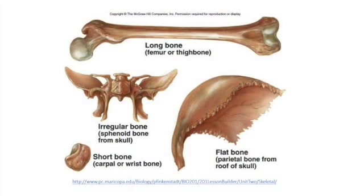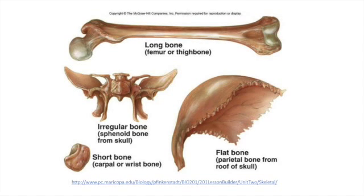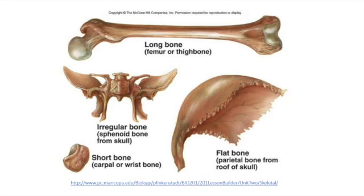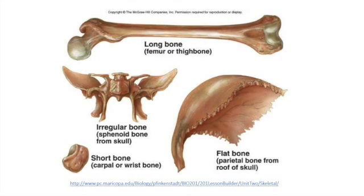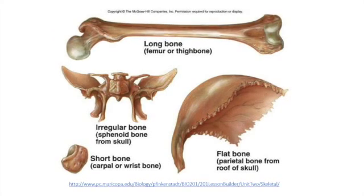There are four main types of bones. You have long bones — these would be like your femur or your humerus, bones found in the arms or legs. They're longer than they are wide.